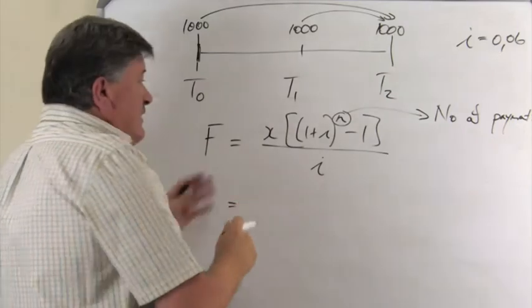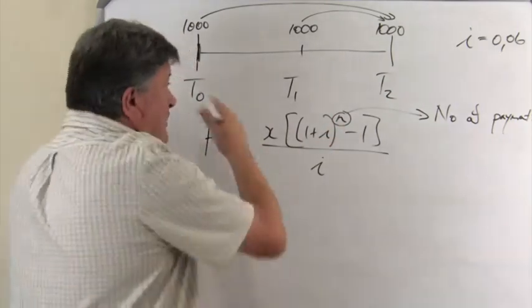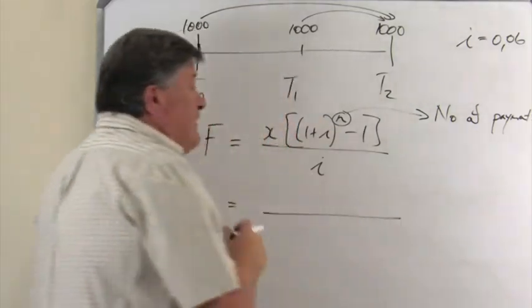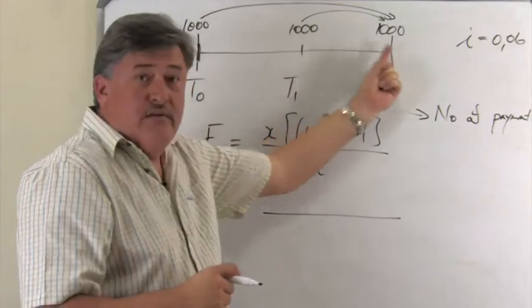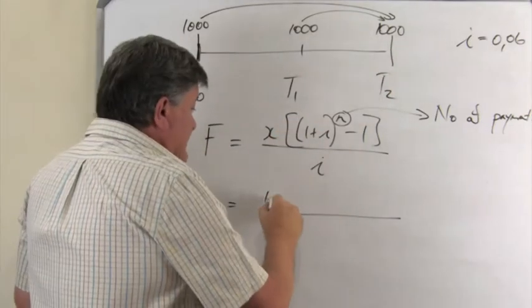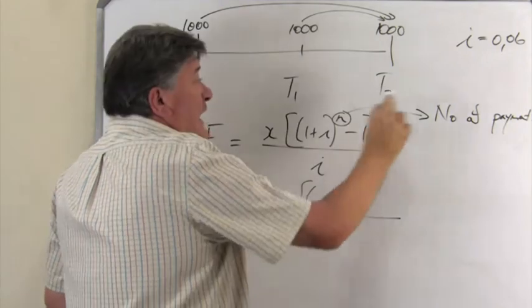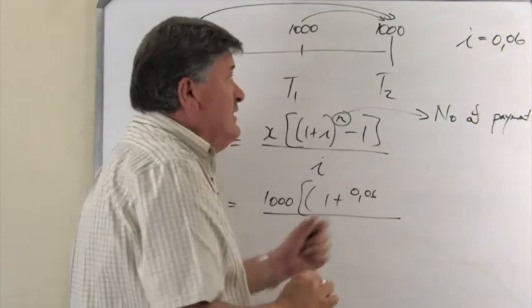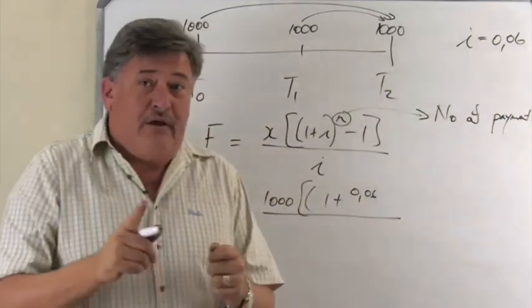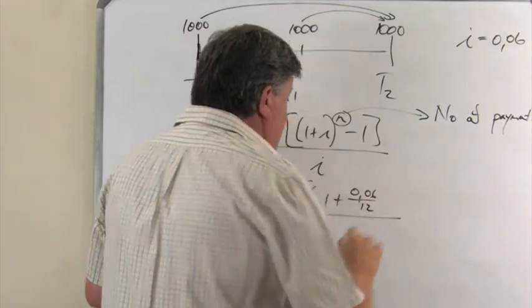So let's see if you now can substitute into this little formula. The same problem what we did. The thousand rand was deposited. Can you see? So the X is 1,000. 1 plus my I, which is 0.06. Please remember, this compounding is monthly, so don't forget. Like in compound interest, you must put it over 12.